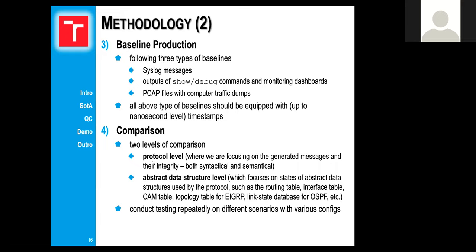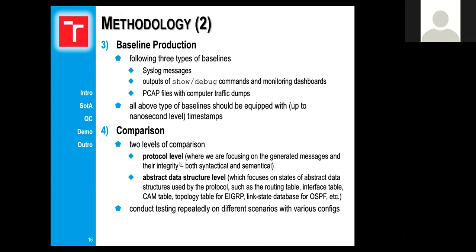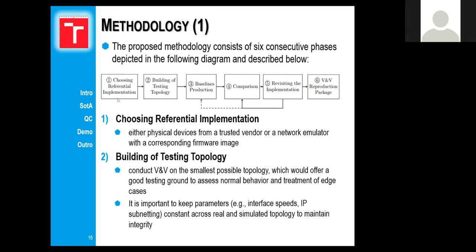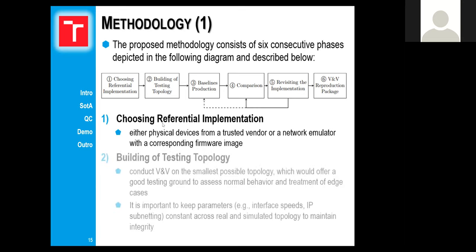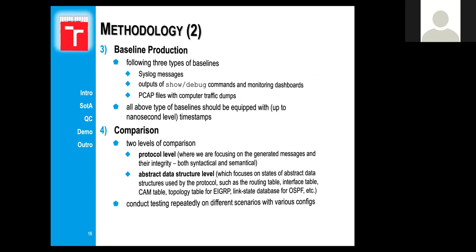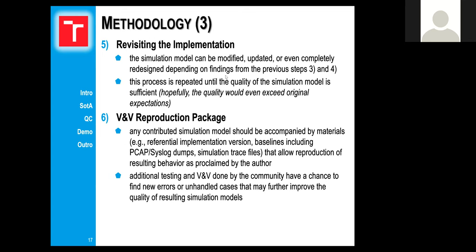The second level is abstract data structure comparison — focusing on changes to data structures on the devices. For example, we monitor the routing table, interface table, topology table for EIGRP, BGP table for BGP, and so on. You also need to conduct this testing repeatedly with different scenarios, multiple topologies, multiple configurations, to get the best results.